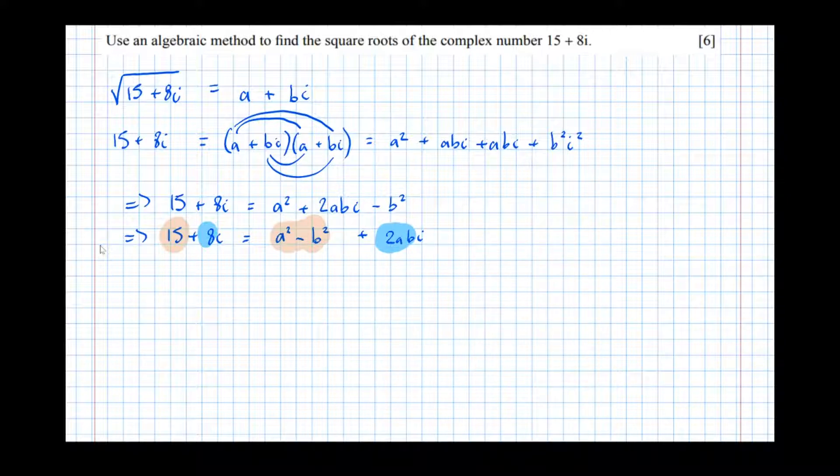So let's write those down. We've got two simultaneous equations now. We've got 15 equals a squared minus b squared - let's call that equation A. And we've got 8 equals 2ab, which is our second simultaneous equation.